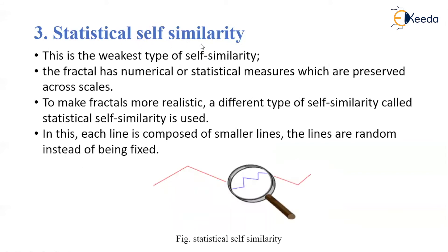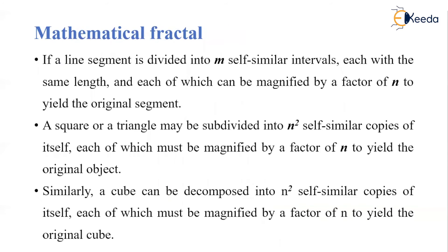The third type is statistical self-similarity, which is the weakest type. The fractal has a numerical or statistical measure that is preserved across scales. To make fractals more realistic, statistical self-similarity is used, where each line is composed of smaller lines that are random rather than fixed — as seen when zooming into part of a line to reveal the same structure.